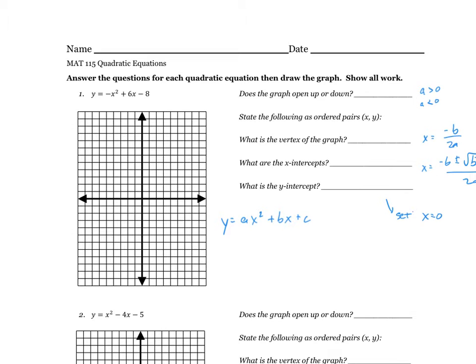So where do we get all these a's, b's, and c's from? Well, my quadratic equation over there, we're going to say a is negative 1. That's the number in front of the x squared. b is positive 6. That's the number in front of the x. And c is negative 8.